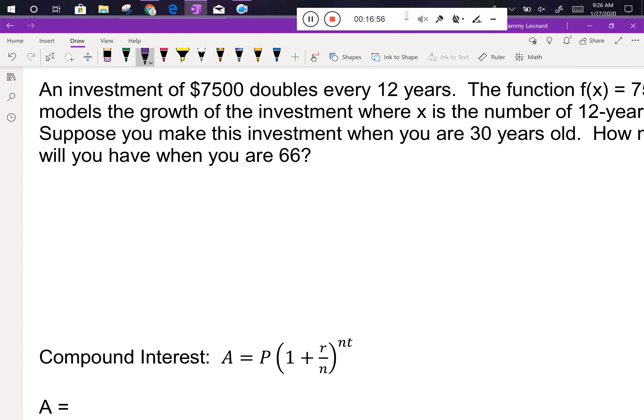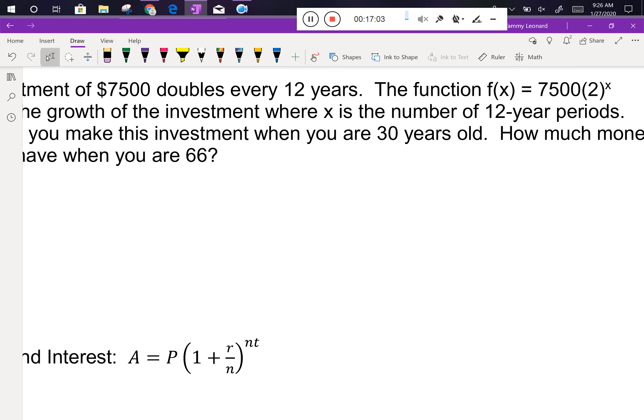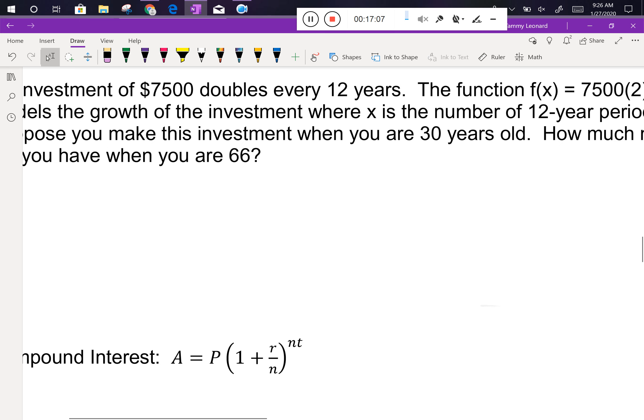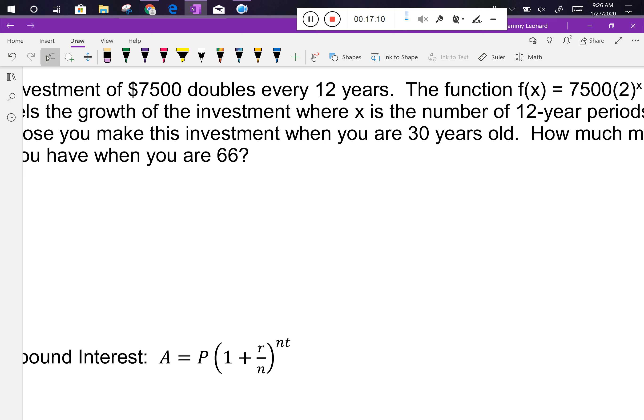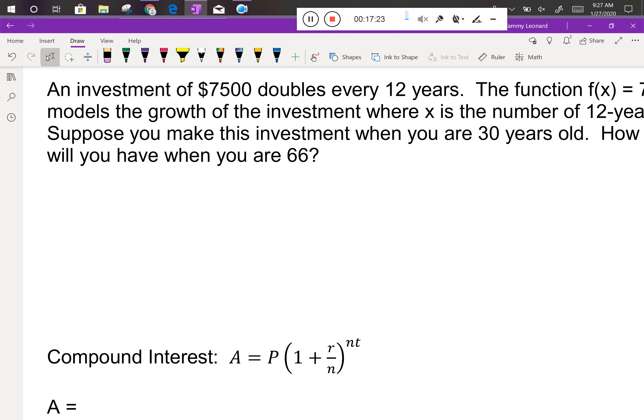Flip to the next page. There's another word problem there. This is a much more pleasant problem. An investment of $7,500 doubles every 12 years. The function f(x) = 7500(2)^x models the growth of the investment, where x is the number of 12-year periods. So x isn't the number of years. It's the number of times 12 years has gone by. Does that difference make sense to everybody? So it says you make this investment when you're 30. You get a signing bonus at a new job. You're like, you know what? I'm going to plan for the future. I'm going to take my signing bonus. I'm going to put it in this investment account. Everybody's good? How much money will you have when you're 66?